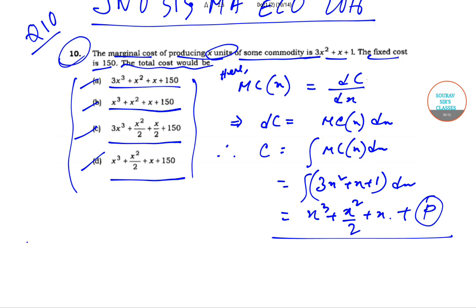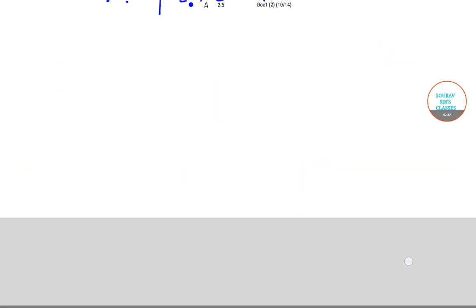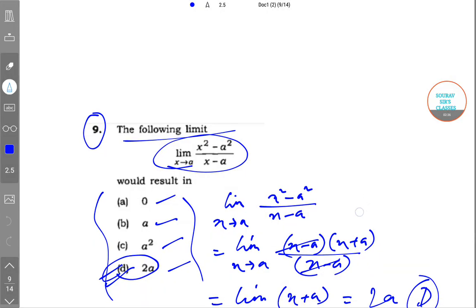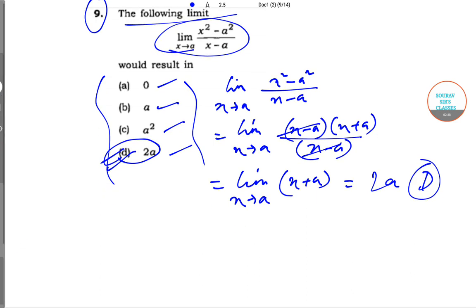So in the cost function, the constant term is the fixed cost. Therefore, p is equal to the fixed cost, which is equal to 150. So that implies that if we replace p over here - let me move to the next page - if we replace p over here...